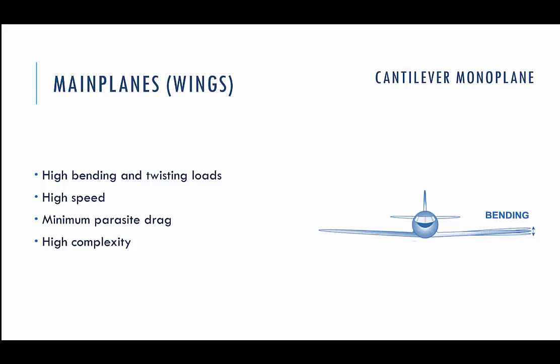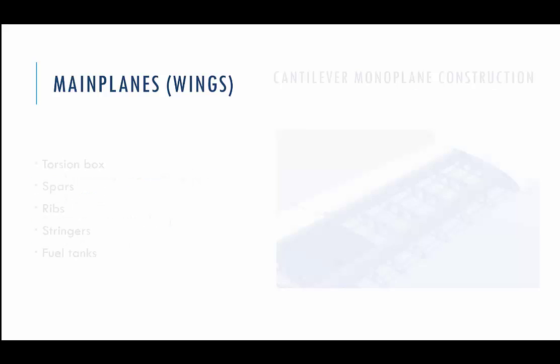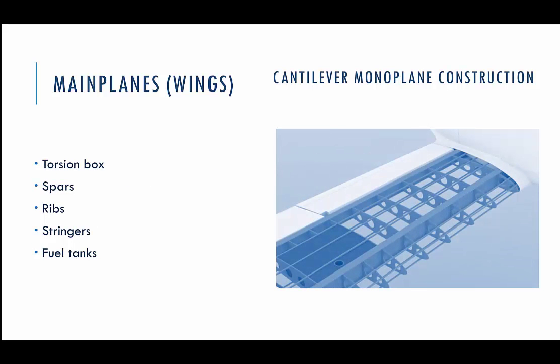Here comes the cantilever monoplane. This type of wing construction is the most common for contemporary high-airspeed airplanes. One example with this wing type is the Piper PA28 airplane. There can be variations with a high position of wings, like the Cessna 182. These have no braces. Because of low parasitic drag, cantilever monoplanes allow high airspeed. This type of wing is the most complex in manufacturing because it must be rigid and endure loads like bending and twisting.